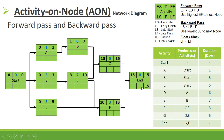Starting the backward pass from the End node: late finish = 15, float = 15 - 15 = 0, late start = 15 - 0 = 15. For G: late finish = 15, float = 15 - 15 = 0, late start = 15 - 5 = 10. For F: late finish = 15, float = 15 - 13 = 2, late start = 15 - 3 = 12.